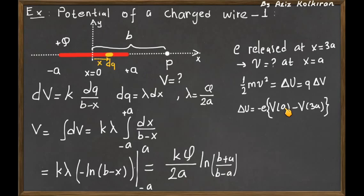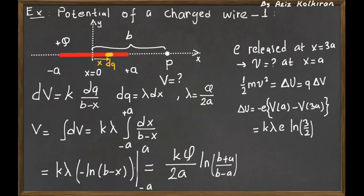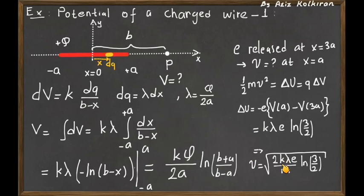Since x = a is the final point, the electron is attracted toward the rod. Expressing the potential energy difference explicitly using the potential formula and the linear charge density λ, the change in potential energy equals k·λ·e·ln(3/2). Setting this equal to the kinetic energy and solving for v, the final speed of the electron is v = √[2kλe·ln(3/2) / m_e].